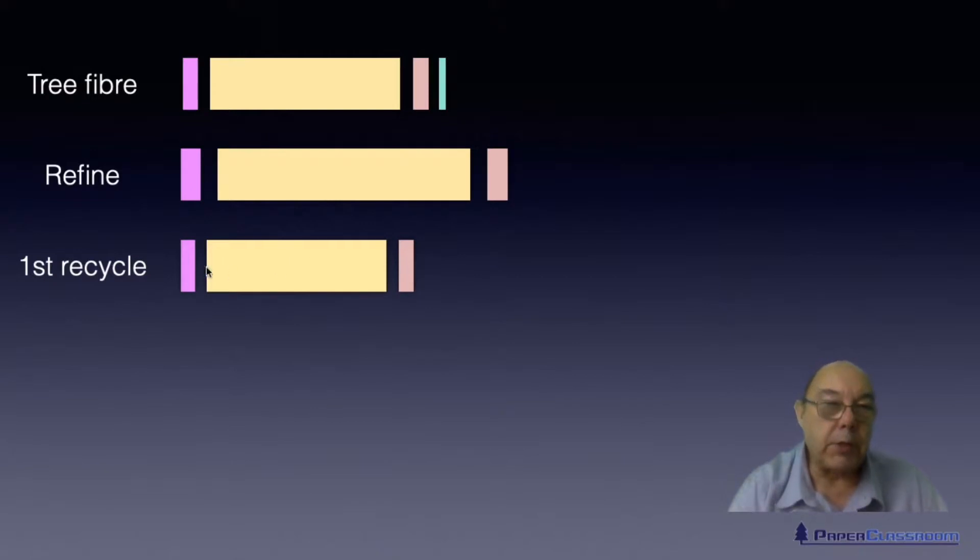But because this gap is smaller, that gap is smaller, and that gap is smaller, and these walls have become more dense, it's harder for the water to get in. So the fiber does not swell as much. So because it doesn't have as much water in it, it's not as flexible. So it becomes stiffer.